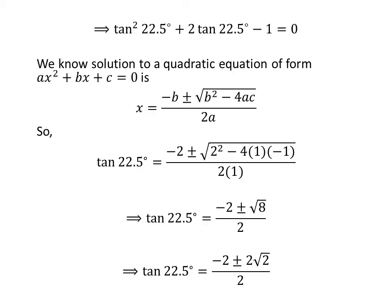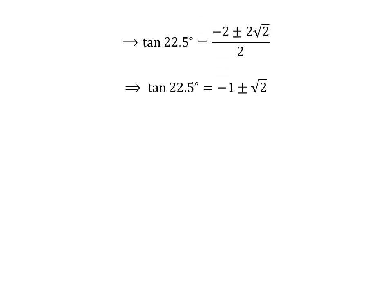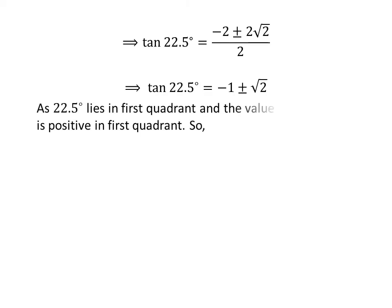We know square root of 8 is equal to 2 times square root of 2. We can see 2 is a common factor in the numerator, so cancelling the common factor 2 in the numerator and denominator we get tangent of 22.5 degrees is equal to minus 1 plus or minus square root of 2. Since 22.5 degrees lies in the first quadrant and the value of the tangent function is positive there, tangent of 22.5 degrees is equal to square root of 2 minus 1, as the other value minus 1 minus square root of 2 is a negative number.